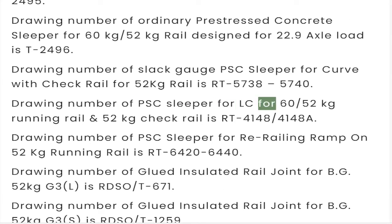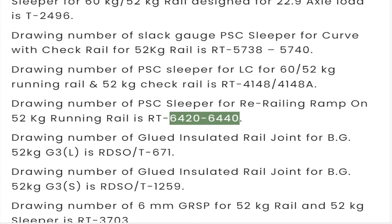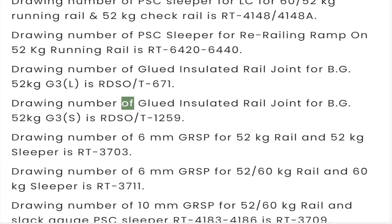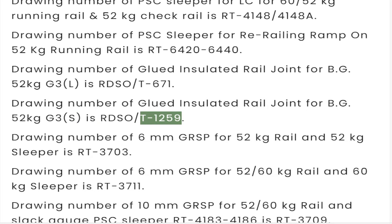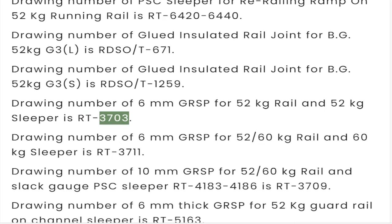Drawing number of slack gauge PSC sleeper for curve with check rail for 52 kg rail is RT5738 to 5740. Drawing number of PSC sleeper for LC for 60/52 kg running rail and 52 kg check rail is RT4148. Drawing number of PSC sleeper for rail ramp on 52 kg running rail is RT6426 to 6440. Drawing number of glued insulated rail joint for BG 52 kg G3S is ADSO T1259.